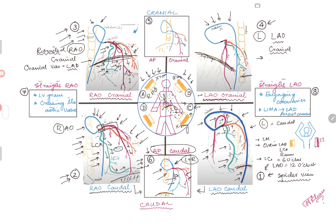The LAO cranial view is good for the LAD since it's a cranial view. The artery very obvious in the middle of the screen — going around six to seven o'clock — will be your LAD. This view is good for the LAD plus diagonal branches, especially the ostium of the diagonal branches, where you can see stenosis or the origin of the diagonals. You can still focus on the left circumflex and ramus intermedius, but they will be foreshortened and may have some overlap.